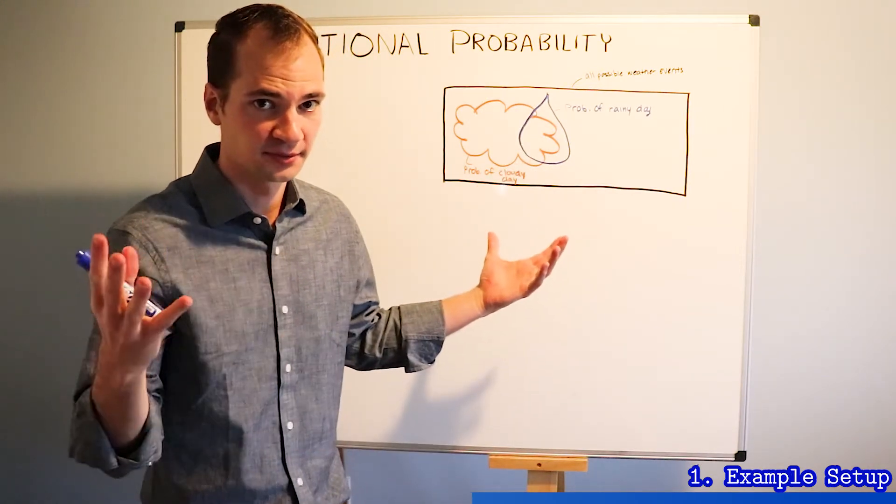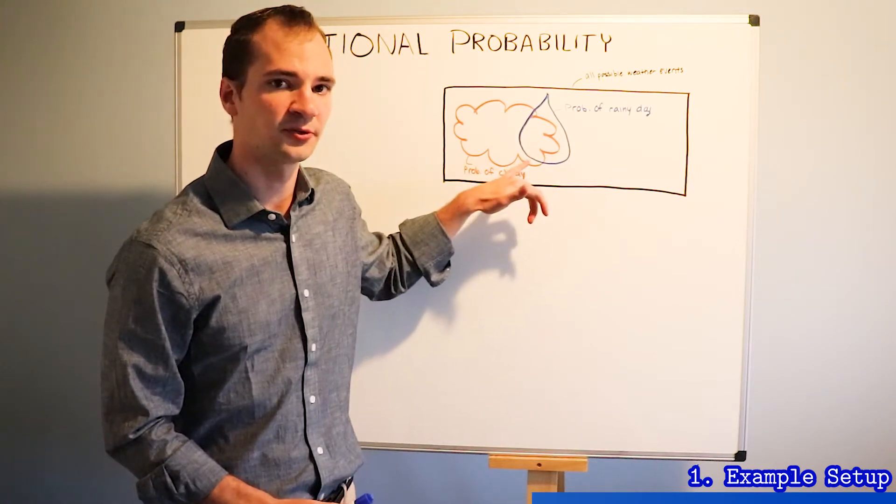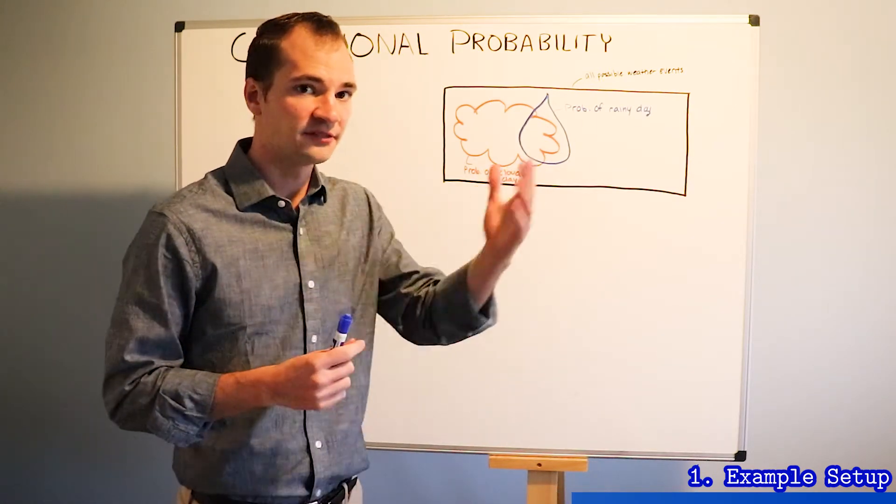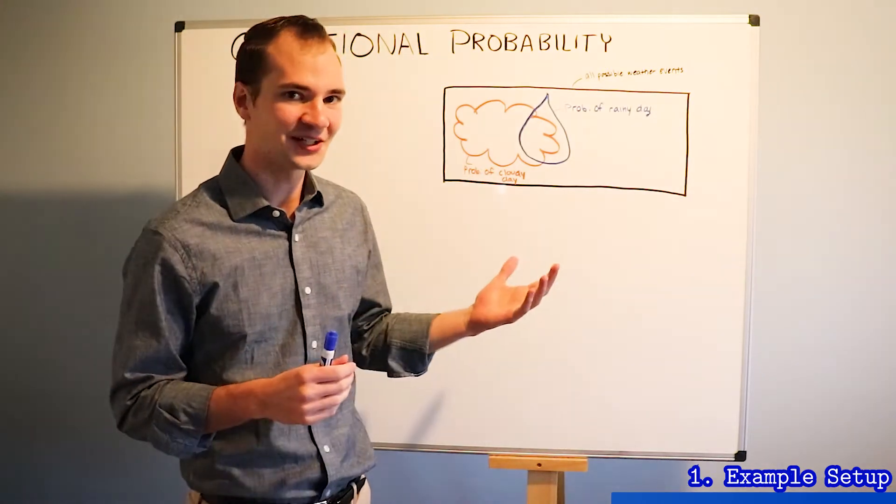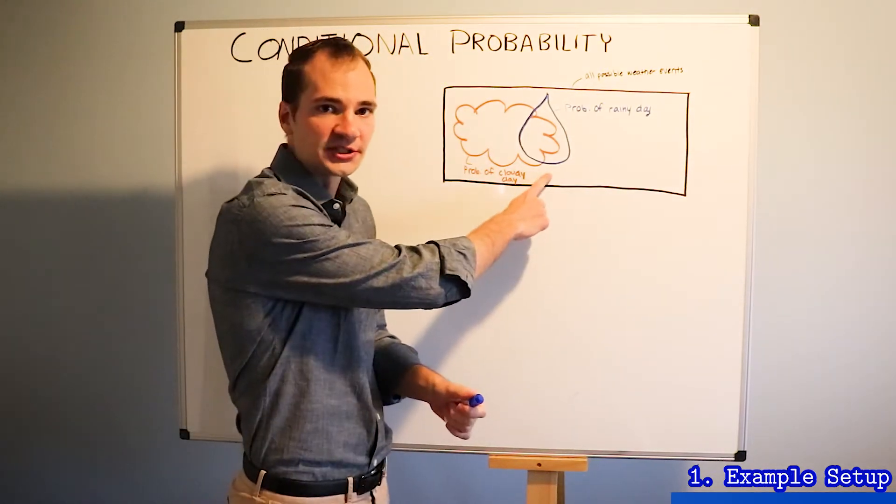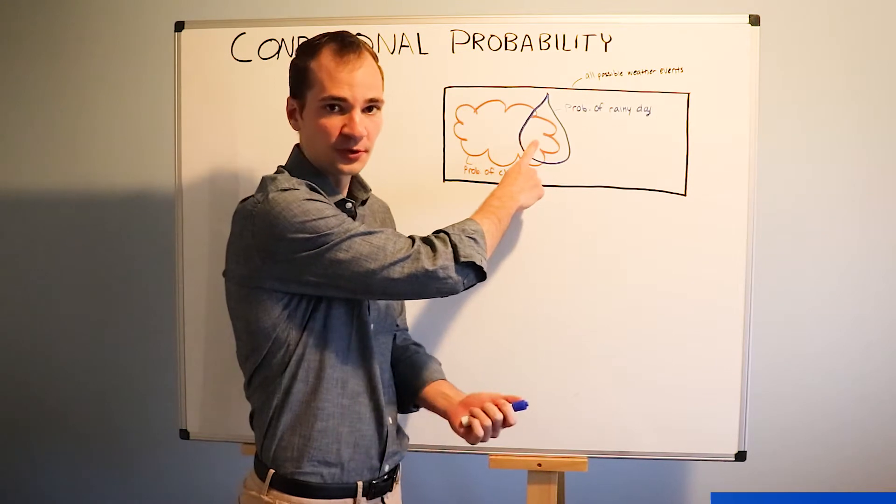Bigger size, larger probability. Notice the overlap between them. Intuitively if it's rainy outside it's likely to be cloudy. Therefore most of the raindrop is overlapping with the cloud.